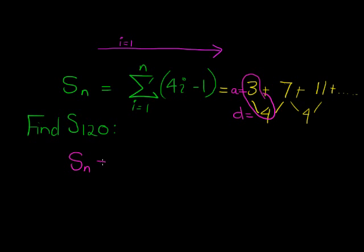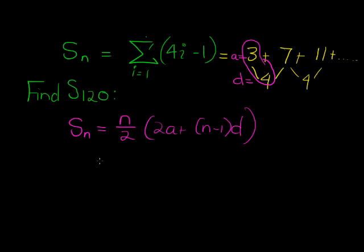So since I know it's an arithmetic series, I can just use the arithmetic series, the sum of the first n terms formula, so n over 2 times 2a plus n minus 1 times d.